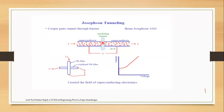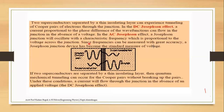The Josephson effect involves two superconductors connected by a thin layer of insulating material, called a Josephson tunneling device. The two superconductors are separated by a thin insulating layer, and tunneling of Cooper pairs of electrons occurs through the junction. The Cooper pair concept relates to lattice vibration from BCS theory.